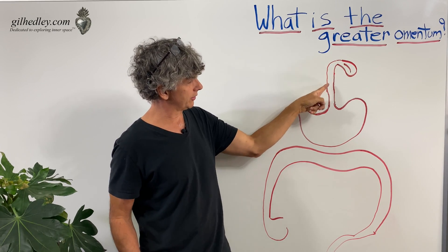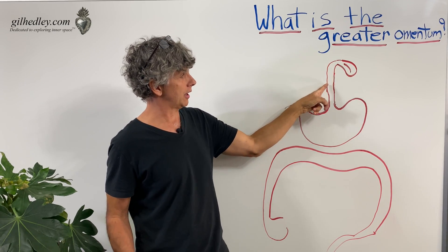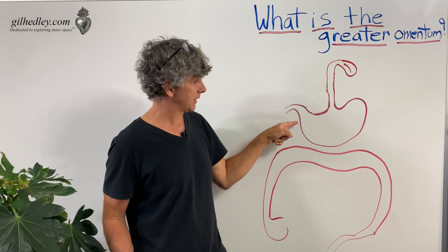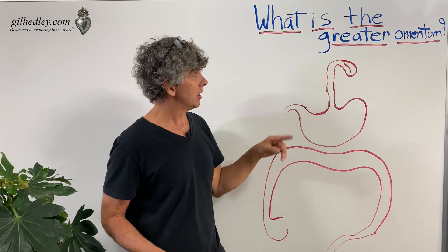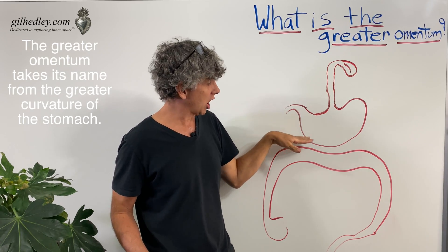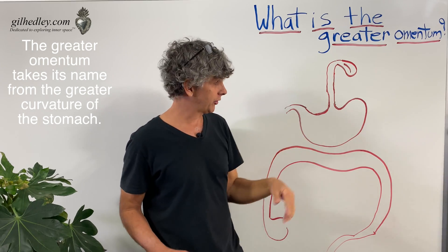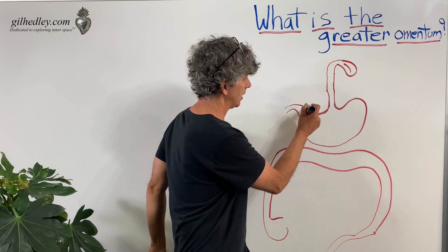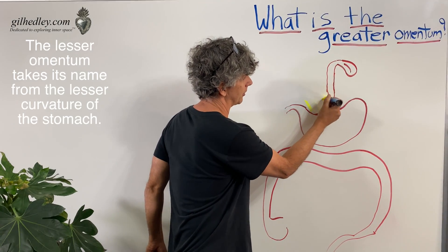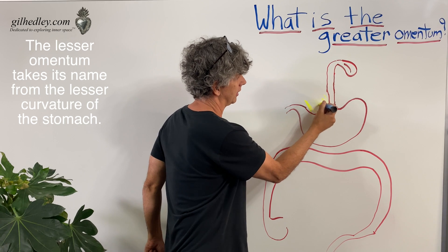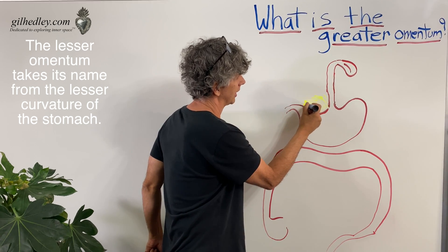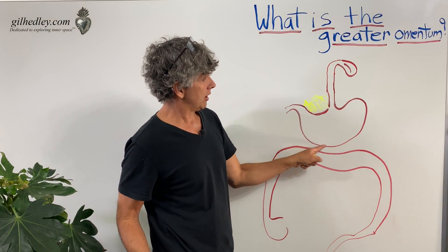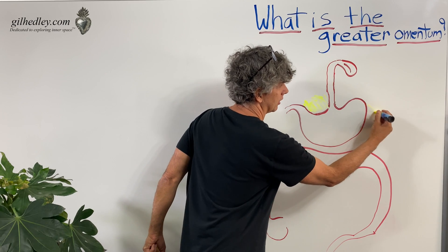Here's the tongue and here's your gullet, your esophagus, coming into the stomach. The stomach has a big curve called the greater curvature. So the greater omentum forms along the greater curvature of the stomach. This is the lesser curvature, and we also have a lesser omentum, which goes from the lesser curvature of the stomach over to the liver, like a fatty membrane. And the greater curvature of the stomach is home to the greater omentum.